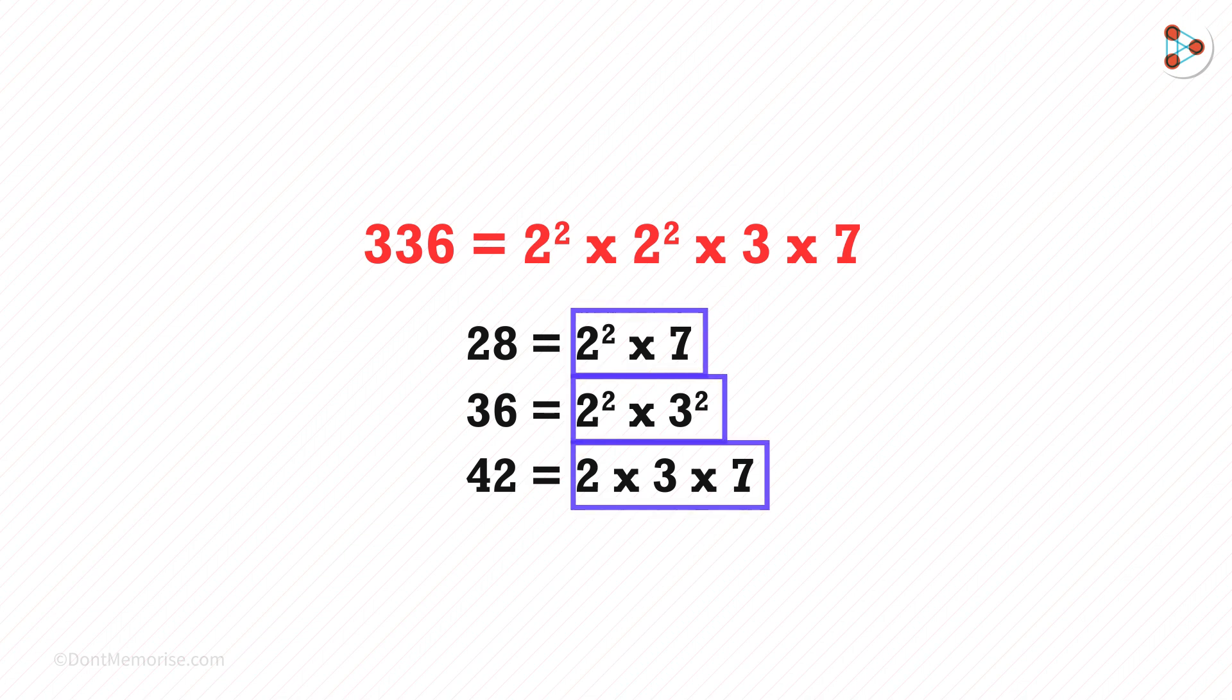Now, we need to see if the prime factors here are present in the main prime factorization or not. So 28 is 2 squared multiplied by 7. In 336, there is 2 squared as well as 7. So 28 is a factor of 336.